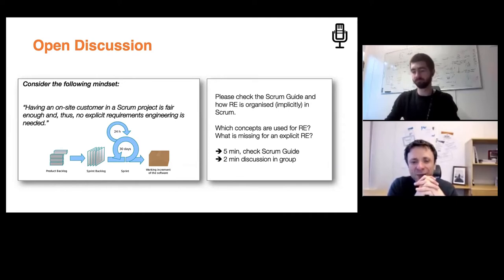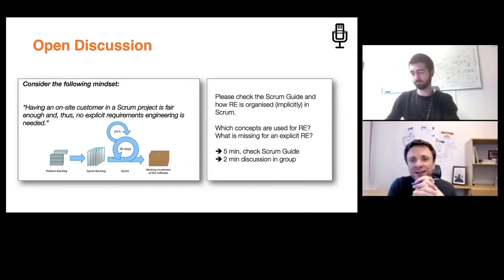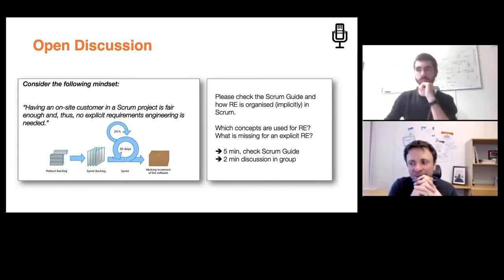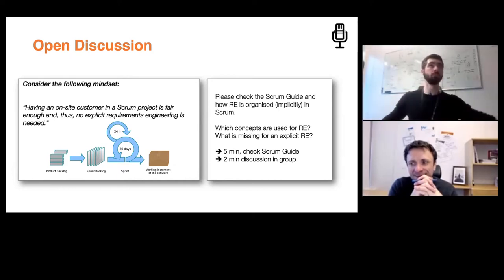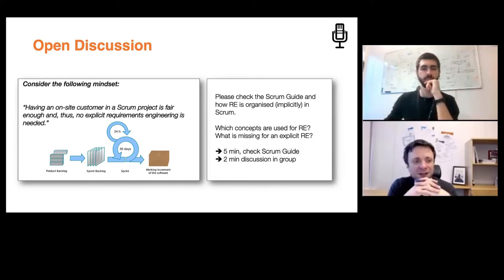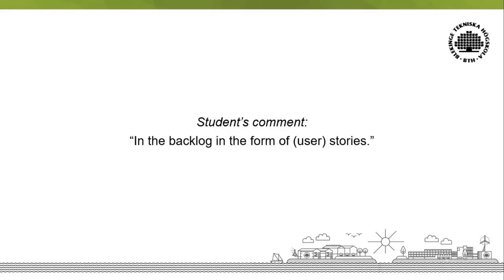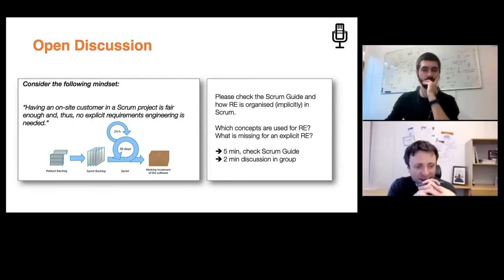How is requirements engineering reflected in Scrum? What do we do in a software process model like Scrum to work on requirements? Requirements are typically found in the backlog in the form of user stories — and it's a great way to specify requirements.